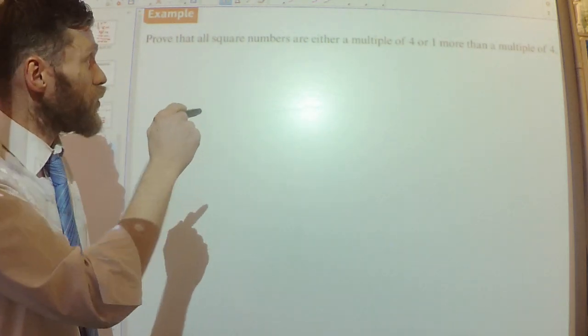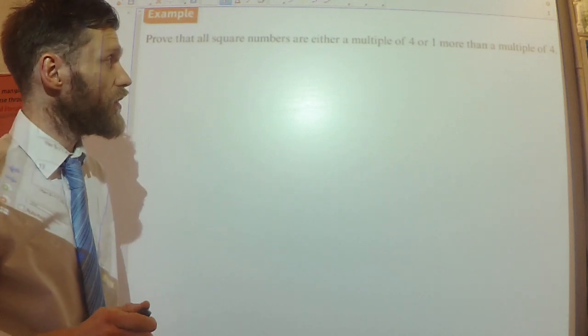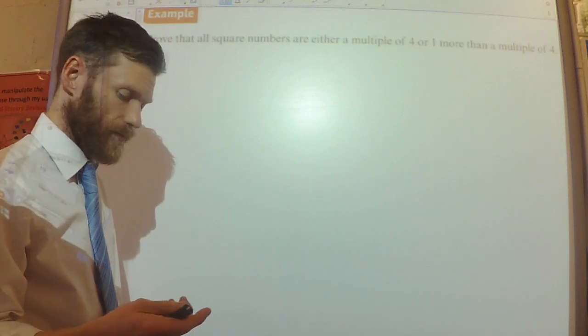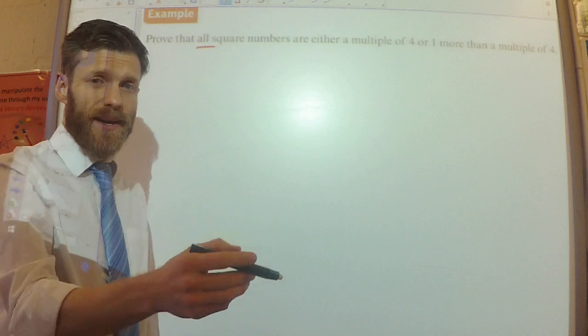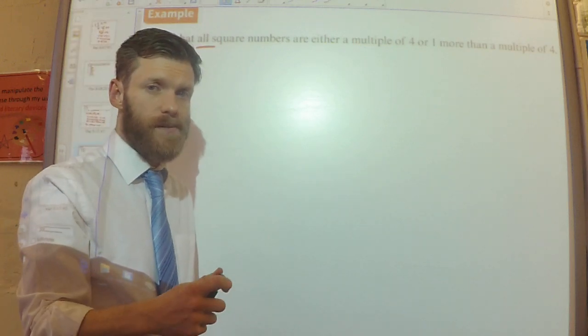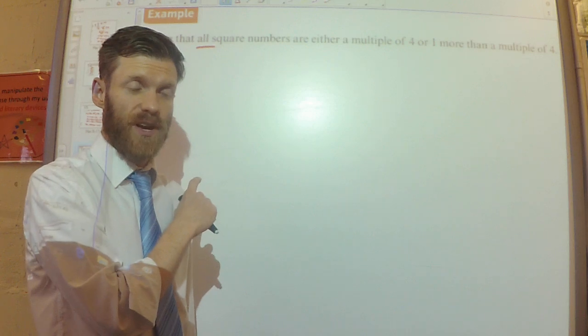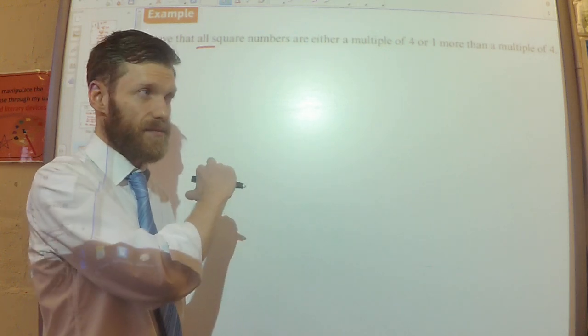So, we need to prove that all square numbers are either a multiple of four or one more than a multiple of four. So, next, we need to prove that for all square numbers. So, it's not like the previous question where I could just test the ones that we're talking about. I need to test all of them.